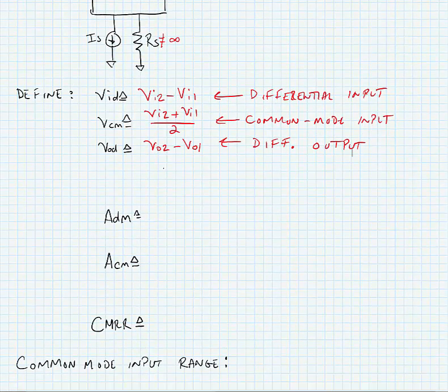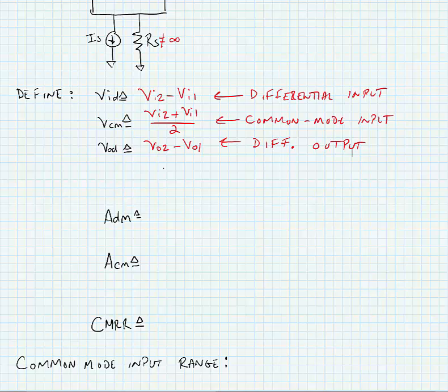Okay, we can define VI1 and VI2 in terms of the common mode and input differential voltage. So we could have VI2 is equal to VCM plus VID over 2, and VI1 is equal to VCM minus VID over 2.